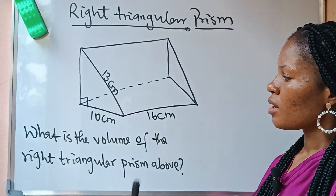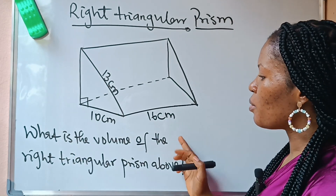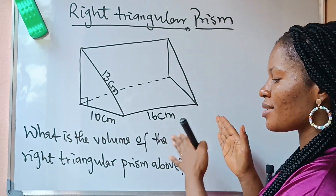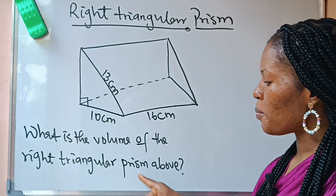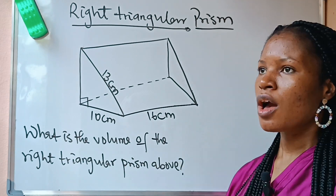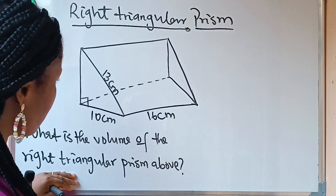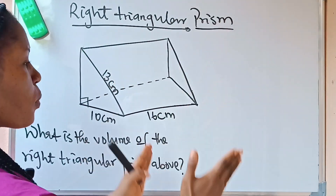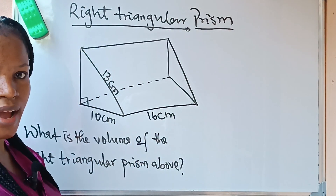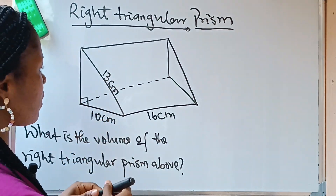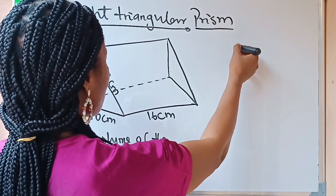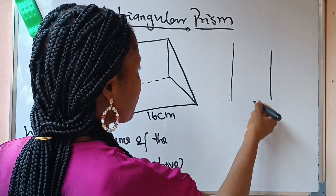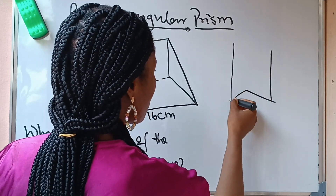We are asked to find the volume of the right triangular prism above. The first thing you need to know is what type of prism this is — it is a right triangular prism. That means the base of this prism is the right-angled triangle, and this is how it is supposed to stand on that right-angled triangle. If I draw it, it's supposed to stand like this.